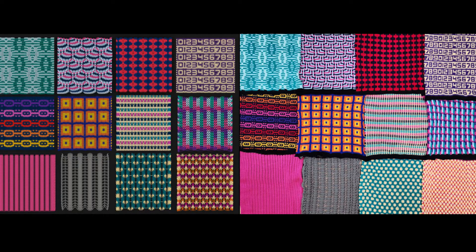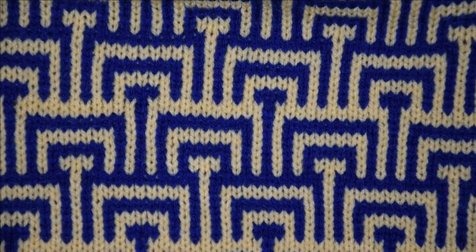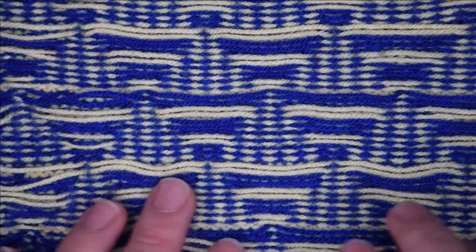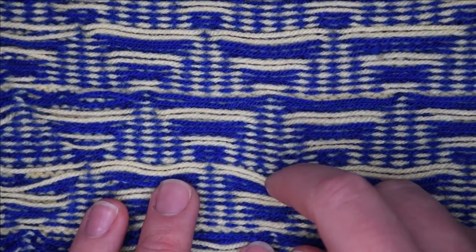There are many ways of adding color to a knit, each with their own limitations and possibilities. Perhaps most well-known is Fair Isle, where a design is produced on one side of the fabric by alternating the yarn color appearing on the front of the fabric. However, this adds floats of yarn to the back.